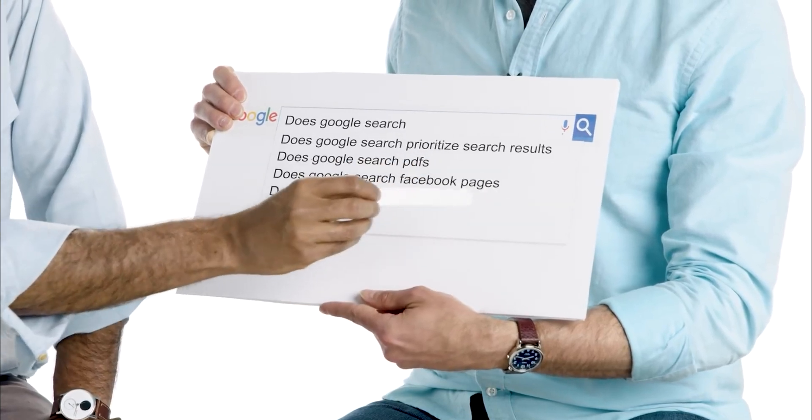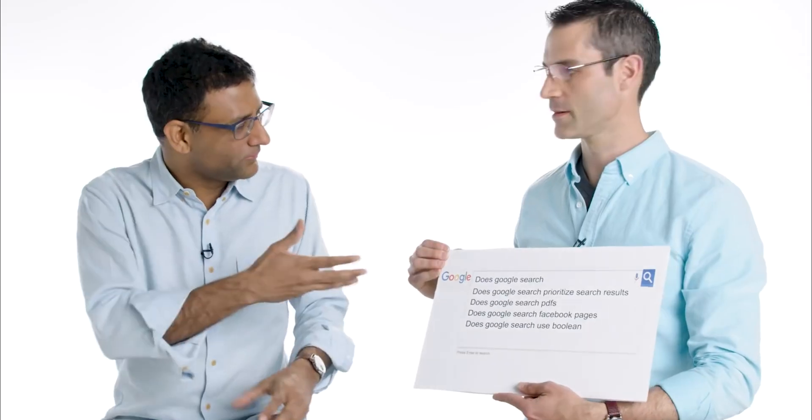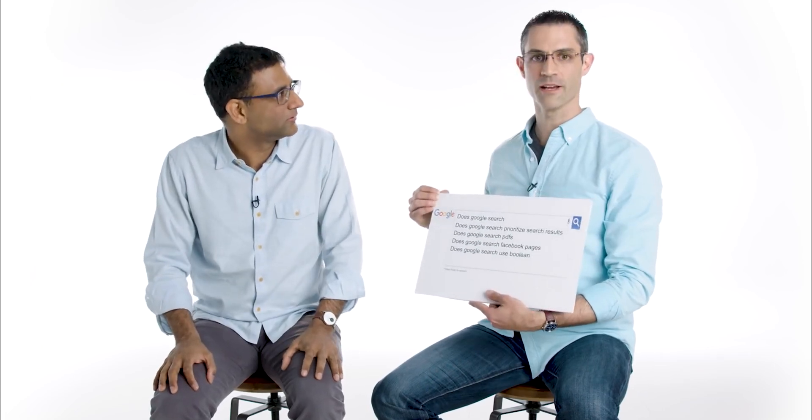There's a Google search technique called Boolean search. This is like the kind you used to find in libraries, where you had to say 'A and B or C.' But you don't have to speak to the search engine like a human. I can't wait to know the secret — so let's start right now.